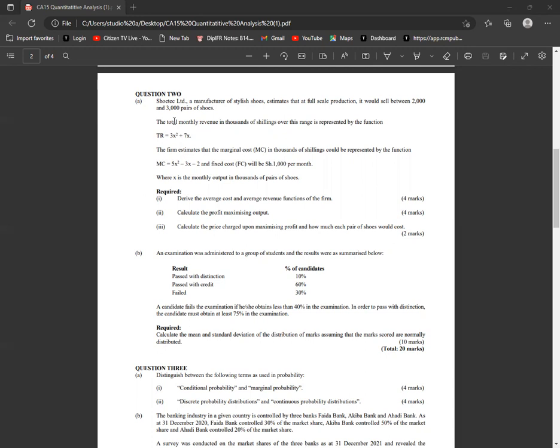The firm estimates that the marginal cost in thousands of shillings could be represented by the function MC equals 5x squared minus 3x minus 2, whereas the monthly fixed costs are a thousand.